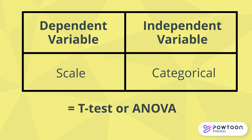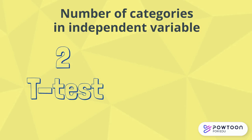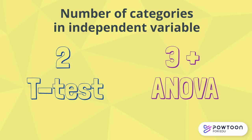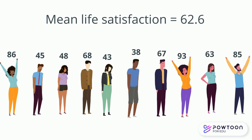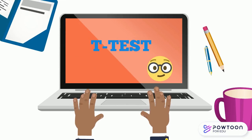If your dependent variable is scale and your independent variable is categorical, then we'll run either a t-test or an ANOVA, or their non-parametric equivalent. If your independent variable has two response categories, then we run a t-test, while if your independent variable has three or more categories, we run an ANOVA. Both the t-test and the ANOVA use the mean score for your scale dependent variable, which in this example is a life satisfaction score out of 100. So to answer the research question, does life satisfaction differ based on sex, where sex is a binary variable, we would run a t-test.